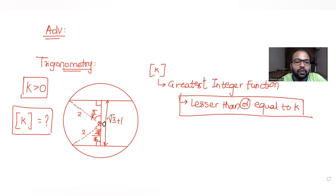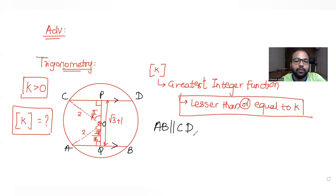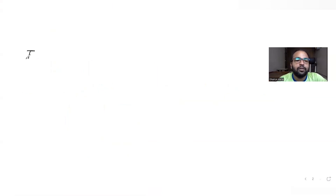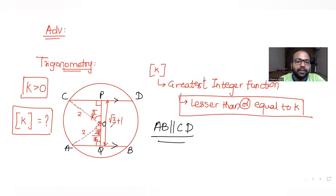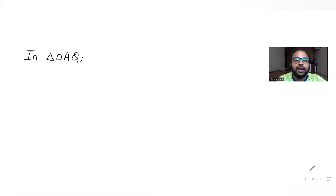Let's name the center of the circle as O, and the relevant points as B, Q, P. Chords AB and CD are parallel to each other. Treating the configuration as right-angle triangles, I can apply trigonometric ratios.